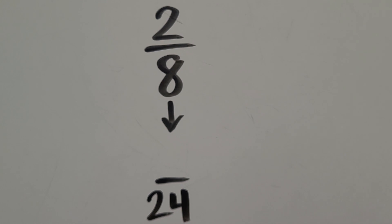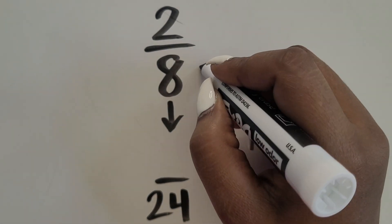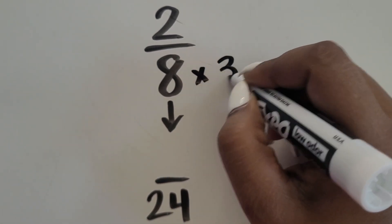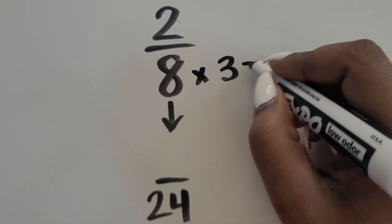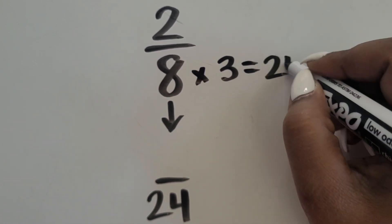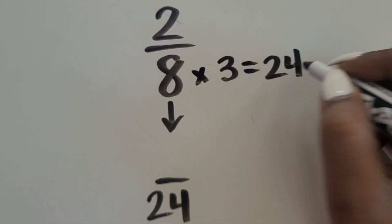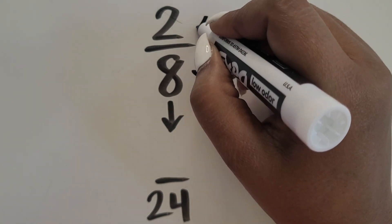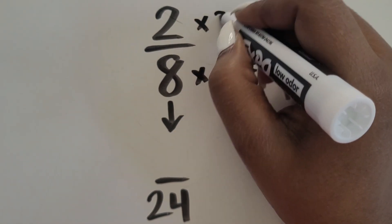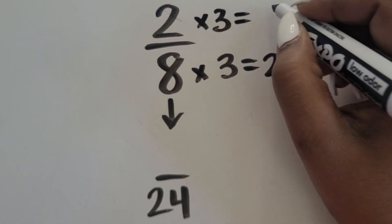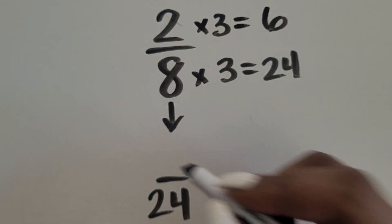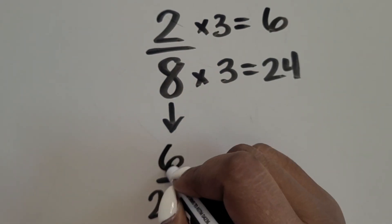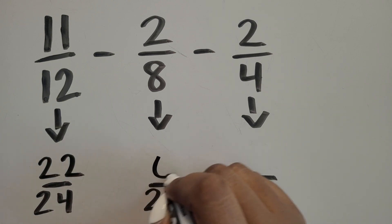Now let's work on two-eighths. How many groups of 8 equals 24? 3. 3 times 8 equals 24. Let's do the same for the numerator: 3 times 2, or 3 groups of 2, equals 6. The equivalent fraction for two-eighths is 6 twenty-fourths.